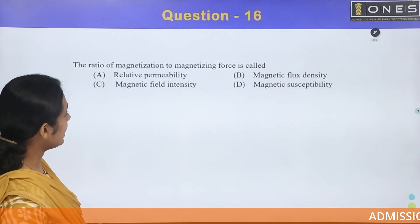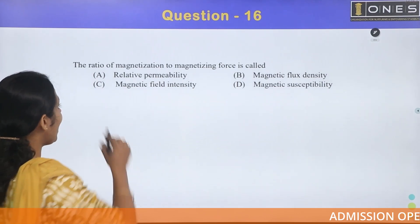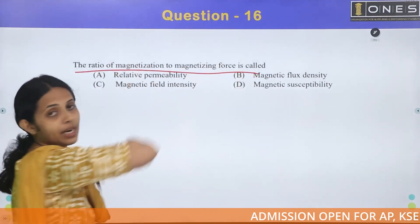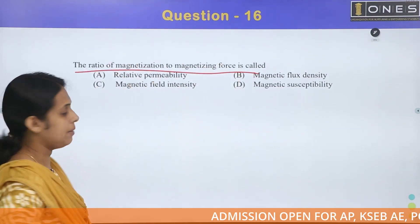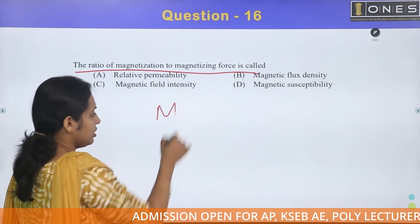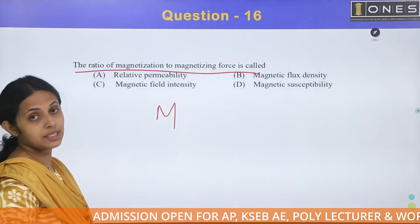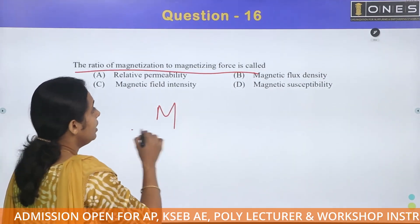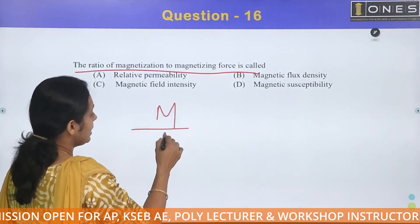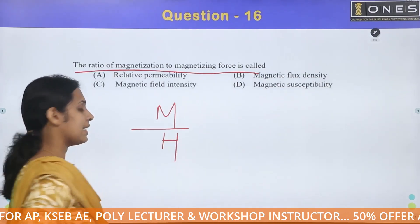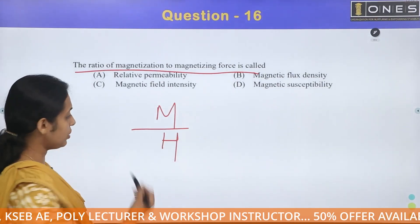The ratio of Magnetization to Magnetizing Force is called Magnetic Susceptibility. Magnetization is represented by M, and Magnetizing Force is the Intensity of Magnetization H.